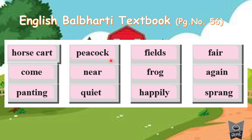I want you all to write these dictation words in your English notebooks at least three times, so that you don't forget them. These are already given in your textbook. Horse cart — H-O-R-S-E, horse; C-A-R-T, cart. Peacock — P-E-A-C-O-C-K. Fields — F-I-E-L-D-S. Fair — F-A-I-R.